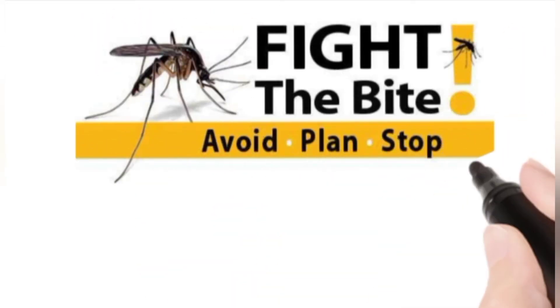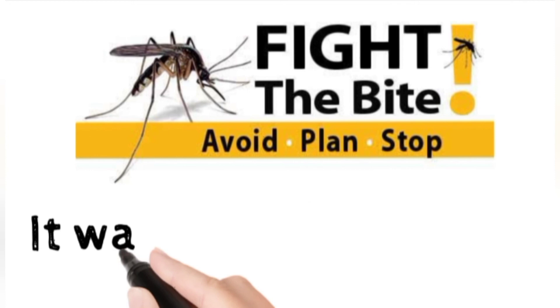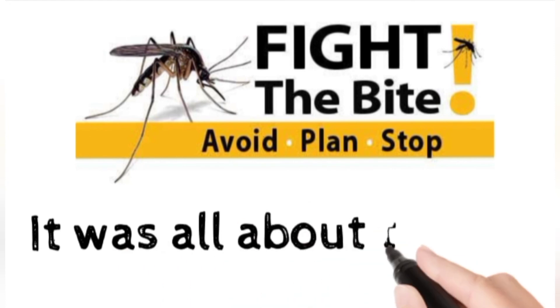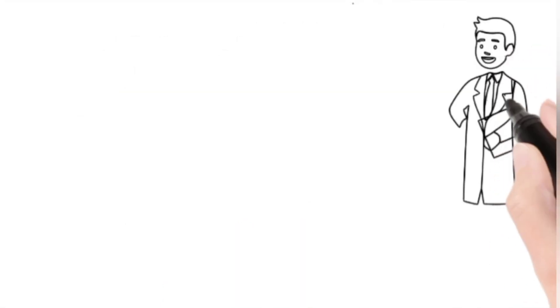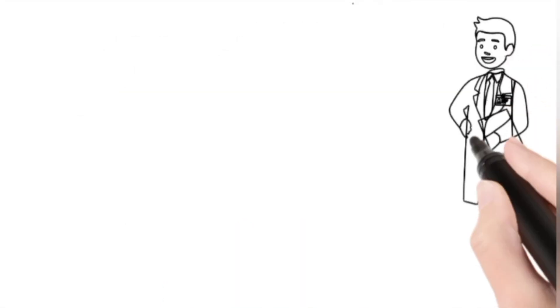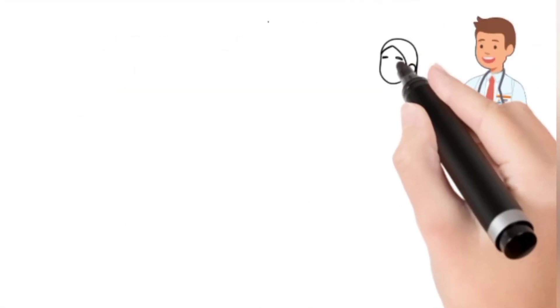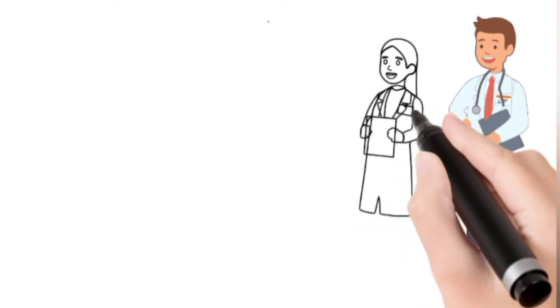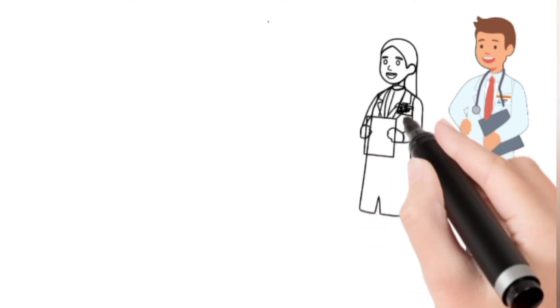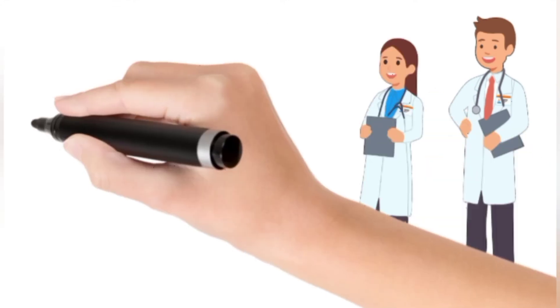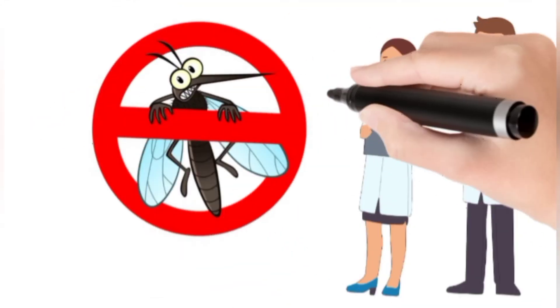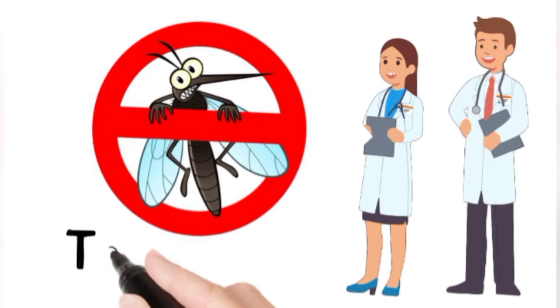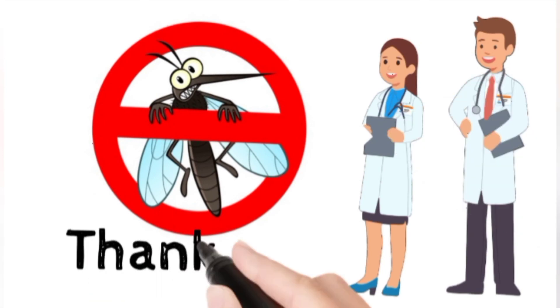So this was all about chapter number five: 'Health Problems Caused by Mosquitoes'. I hope you all have understood today's topic well. Now what you have to do is read the chapter once and also do self-study. Thank you.